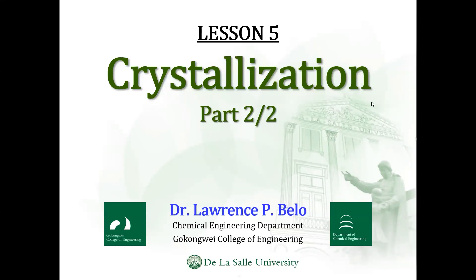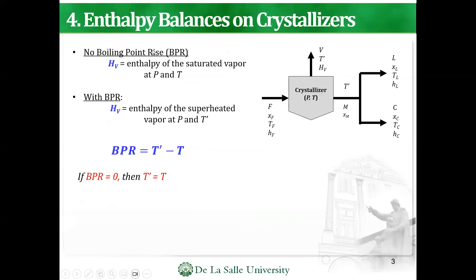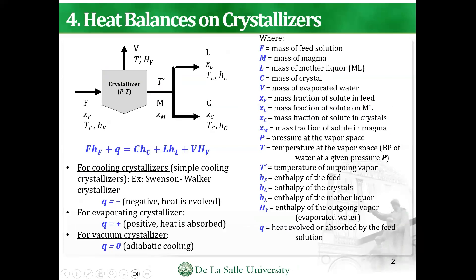So let's go to crystallization part two. You can see that the difference between the first one and this one is that here, you will already have what you call the heat balances. So you can see the figure — I have added temperatures and enthalpies already, as opposed to simply the mass fractions.